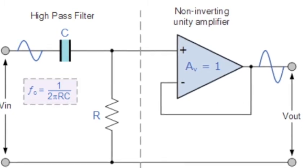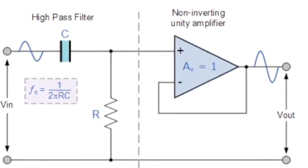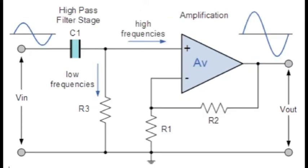The simplest form of an active high-pass filter is made by connecting a standard non-inverting op-amp to a basic RC filter. An active high-pass filter bars the low-frequency signal and passes high-frequency signal. The frequency response of the circuit is the same as a passive filter.